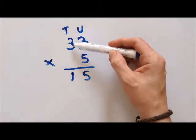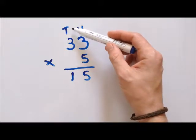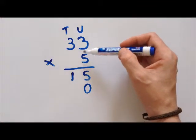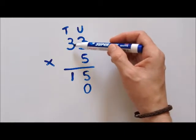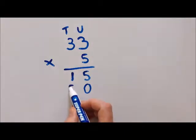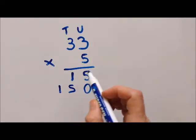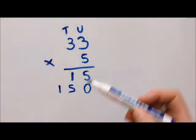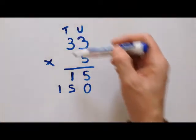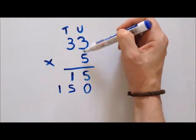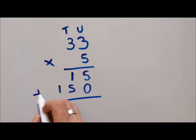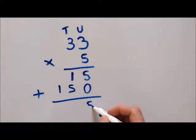Now we move across to the tens column, and it's five times three, but remember it's thirty. What I like to do is put the zero in here, because I know it's going to be a multiple of ten. So five times three is fifteen, but as we put it in here we know it's a hundred and fifty — it's five times three times ten effectively. Then we just add this up: zero and five is five, five plus one is six, one plus nothing is one. There's your answer: 165.